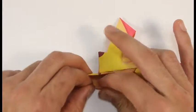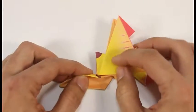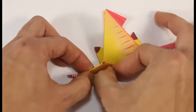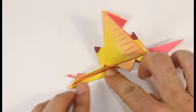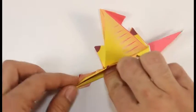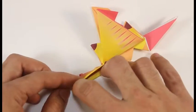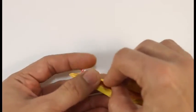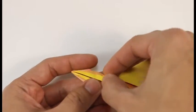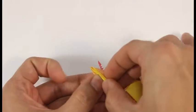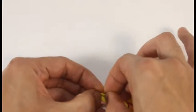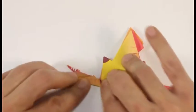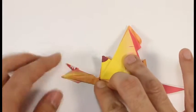Open up the neck and fold the outside edges to the center to thin the neck. And again on the other side.